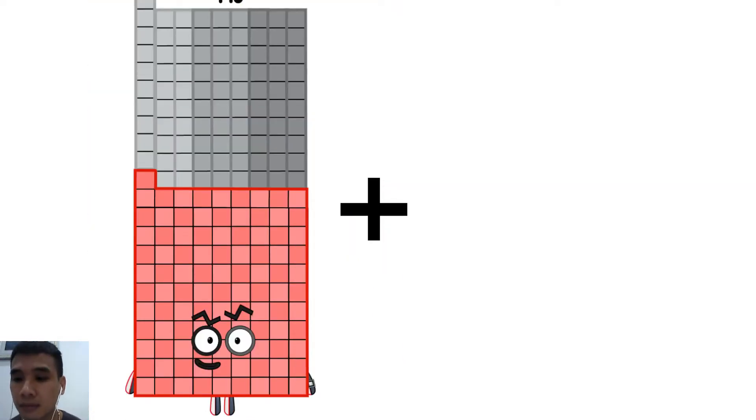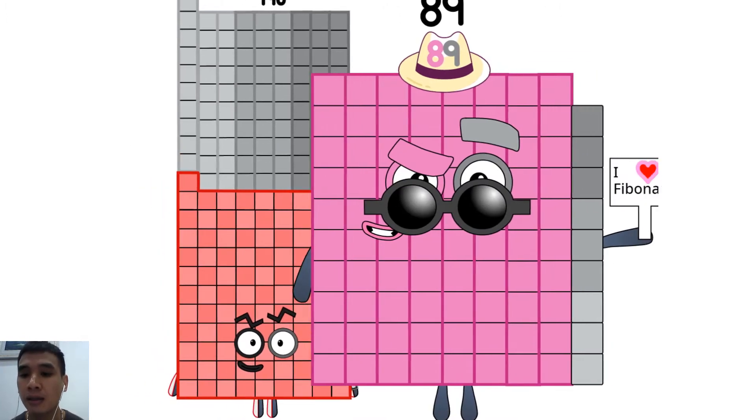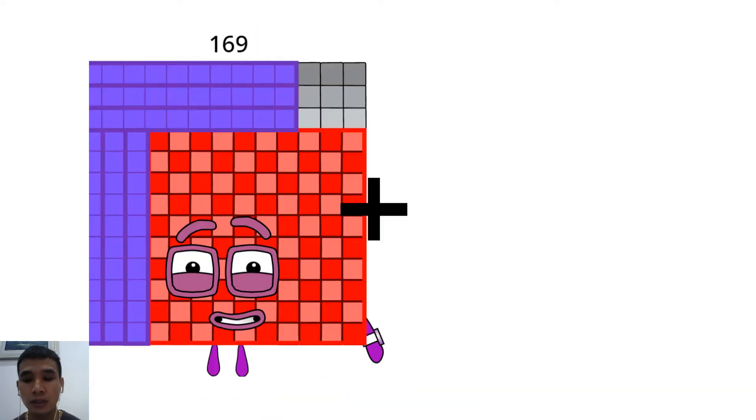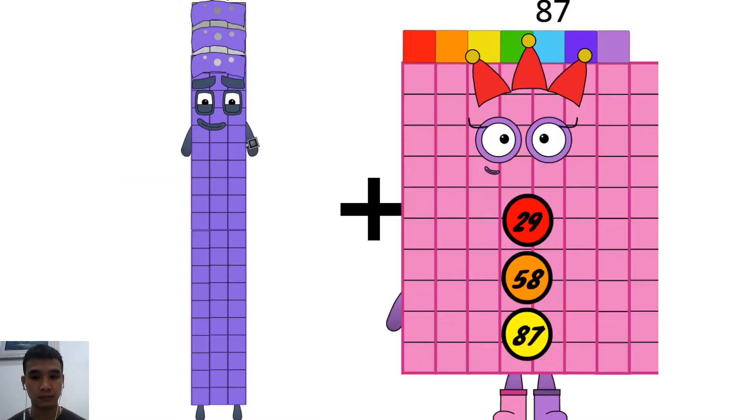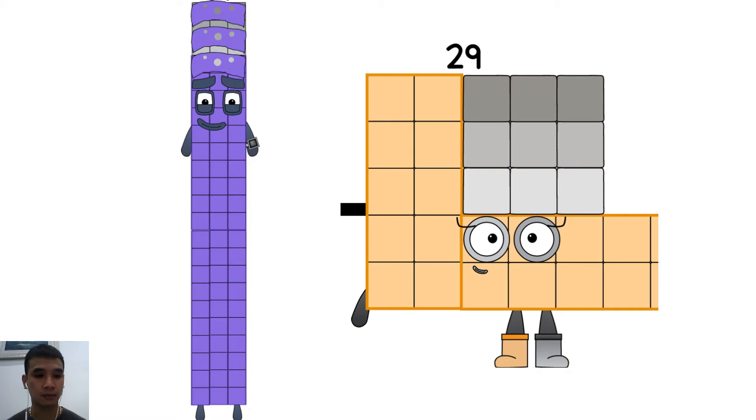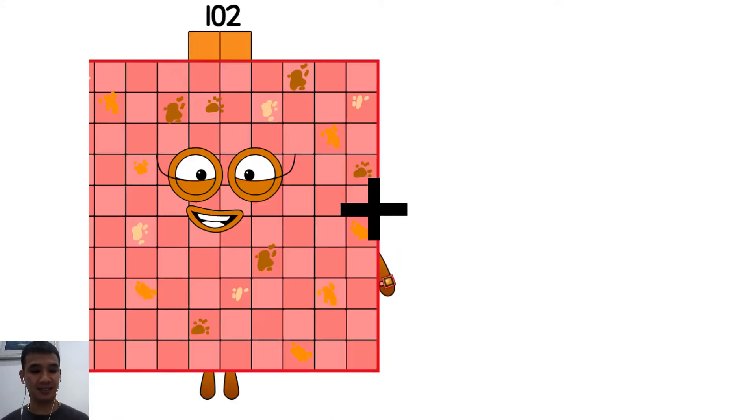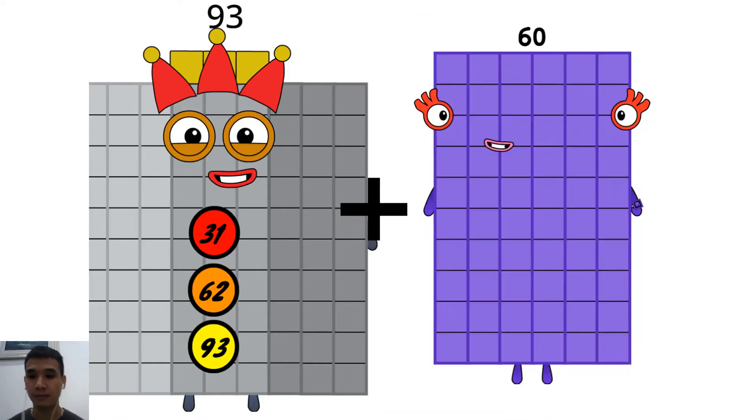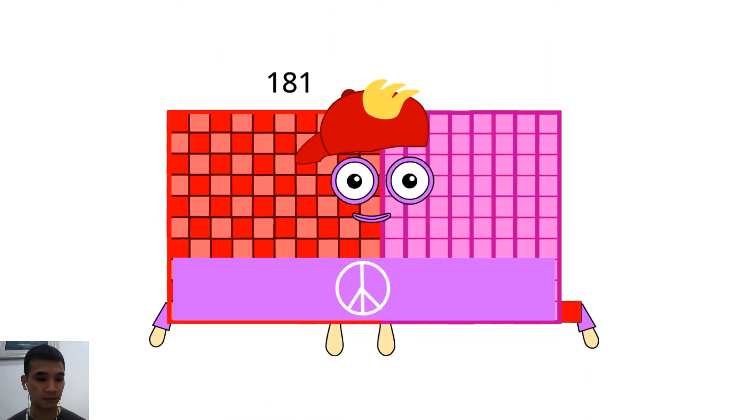190 plus 89 equals 279. 69 plus 29 equals 98. 93 plus 88 equals 181.